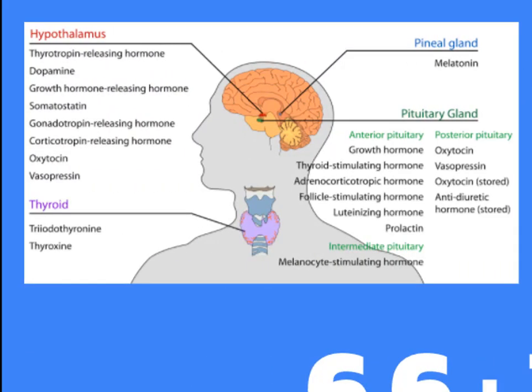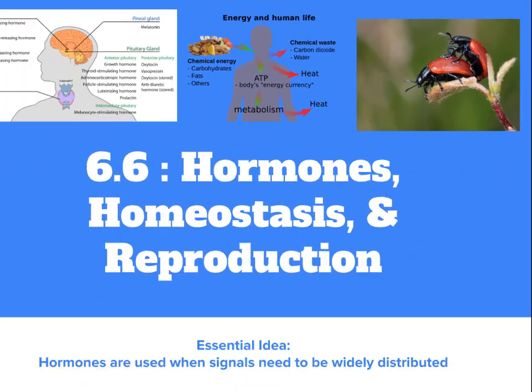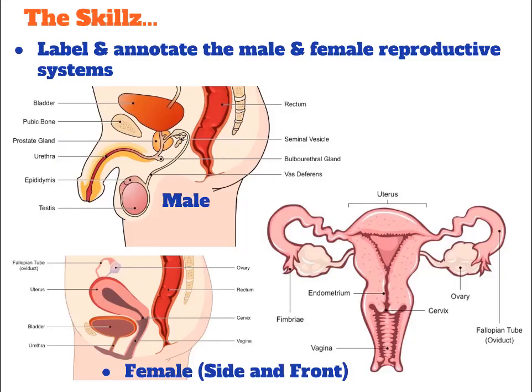While we certainly don't have time to learn about all the hormones our bodies have and use, we're going to focus on a few: insulin, thyroxin, leptin, melatonin, and of course the hormones related to sexual reproduction and human development. So let's do it.